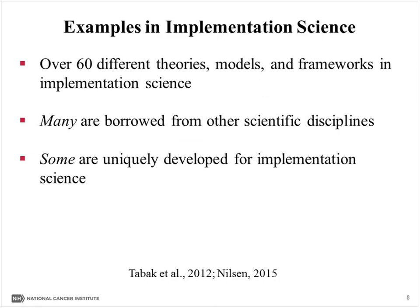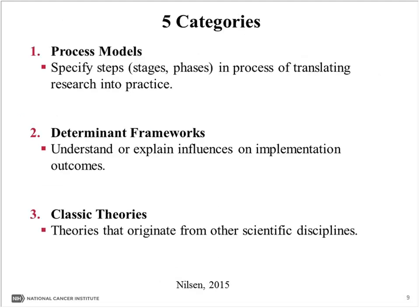With respect to implementation science, a 2012 review by Rachel Tabic and colleagues identified over 60 different theories, models, and frameworks used in the published implementation science literature. Many of these are borrowed from other scientific disciplines, and only some are uniquely developed for implementation science. A helpful way of categorizing these was presented by Nielsen and colleagues in 2015, who organized them into five separate categories, which may be helpful when selecting one for your proposed study.